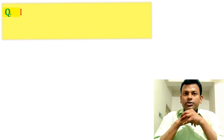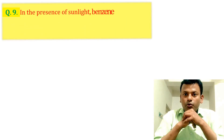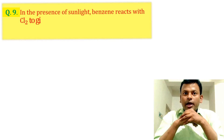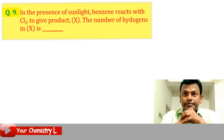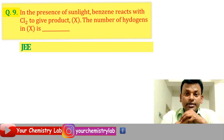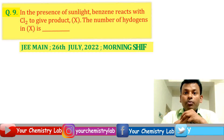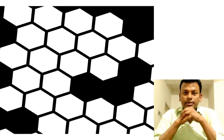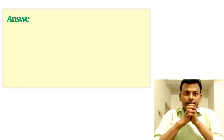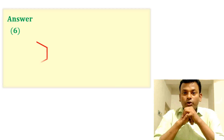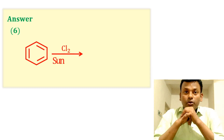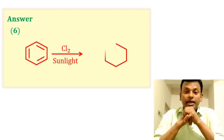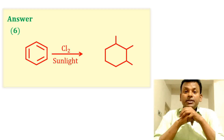Question 9: In the presence of sunlight, benzene reacts with chlorine to give product X. The number of hydrogens in X is how many? This question was set in JEE Main 26th July 2022 morning shift. Answer: six. Benzene reacts with chlorine in the presence of sunlight — all six hydrogens are replaced by chlorine — forming BHC, benzene hexachloride.